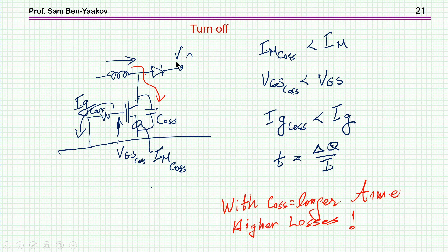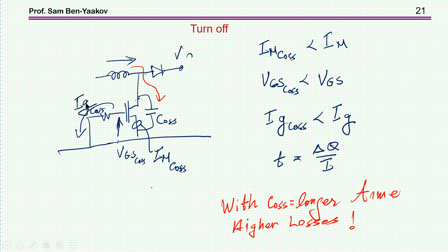During turn-off with C_OSS: some of the inductor current diverts into the output capacitor, so the transistor channel current is smaller. If channel current is smaller, VGS is smaller. Since the gate is now being pulled to ground, the gate current magnitude is VGS / RG — smaller VGS means lower gate current. So in both turn-on and turn-off cases, the presence of C_OSS lowers the gate current and extends the switching time, accommodating the extra power that must come from the input.